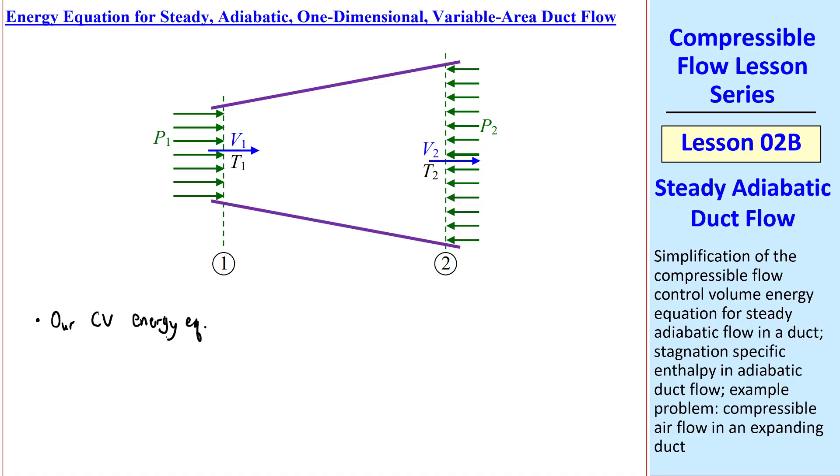Let's start with our control volume energy equation from the previous lesson. We had the integral over the control surface of h plus v squared over 2, rho, v dot n dA equals 0. This is a general equation for steady adiabatic flow.